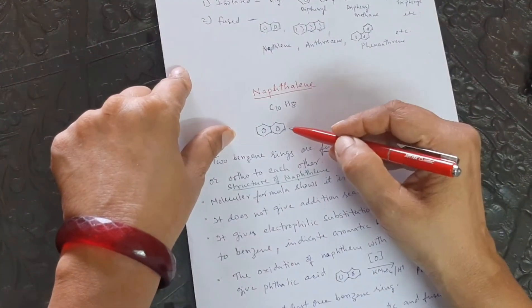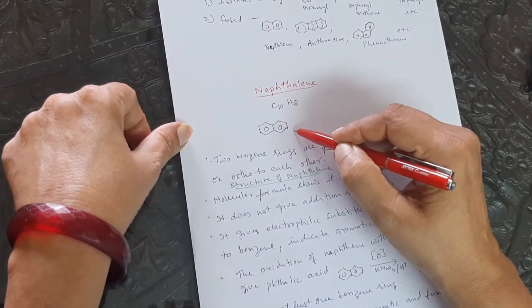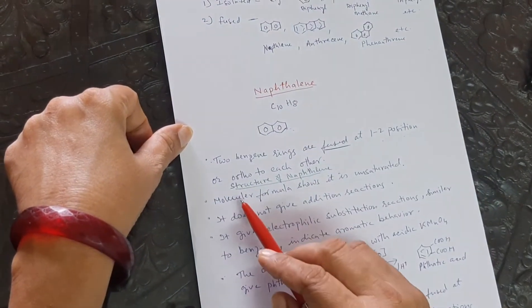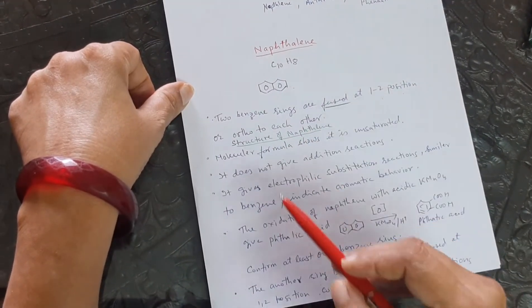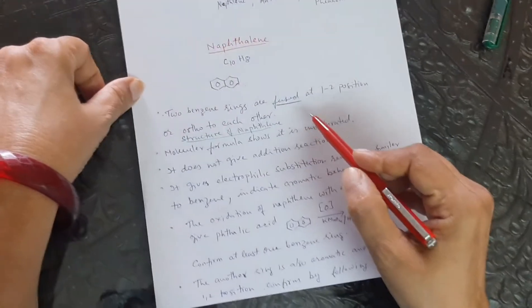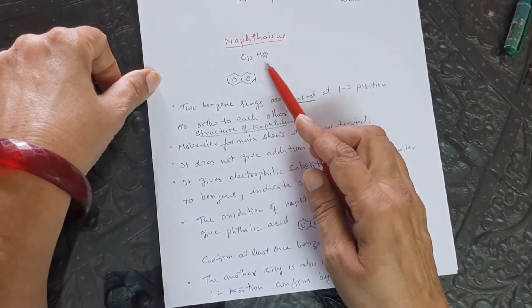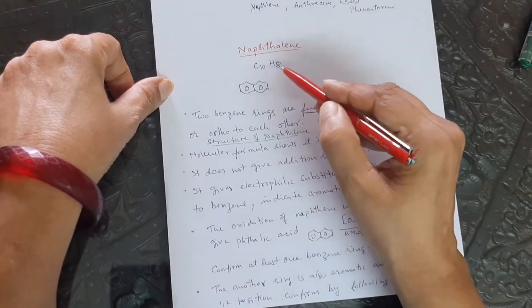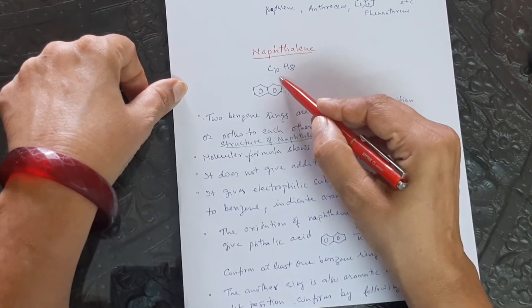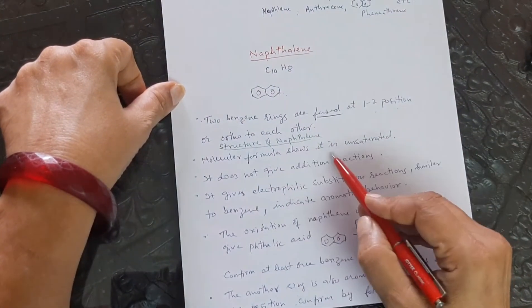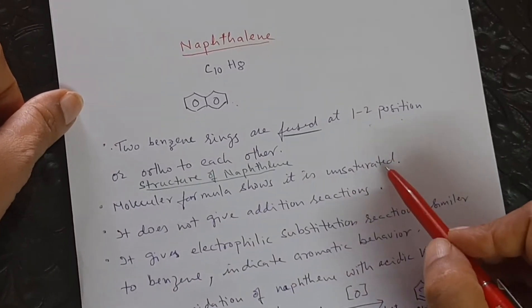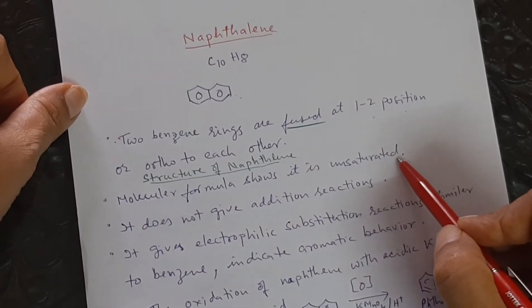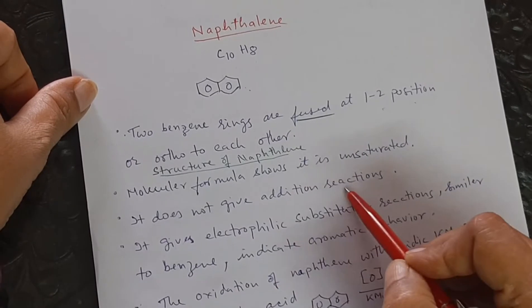To confirm this structure of naphthalene, we will study the following. First of all, the molecular formula of naphthalene is C10H8 which has lesser number of hydrogen atoms than carbon atoms. This shows that naphthalene is an unsaturated compound.